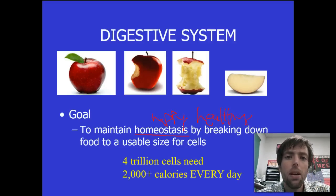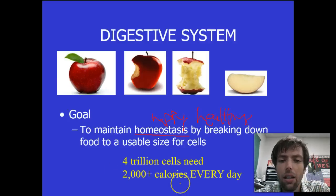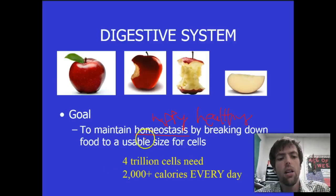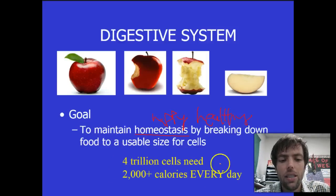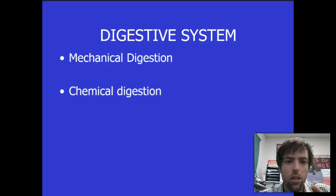So, 4 trillion cells need 2,000 plus calories every day. That's a really big job, and that's the job of that digestive system. So, now we're going to learn, part by part, how we go from apples into calorie sized molecules for your cells. Write down your goal, write down that fun statistic because I'm going to refer to it this entire week. Now, we need to know two big vocabulary words for the digestive system, and that is mechanical and chemical digestion.